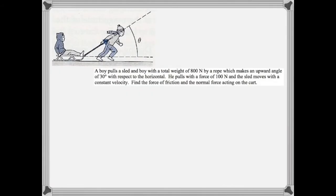In this situation, there is a boy on a sled with a combined weight of 800 newtons. Another boy is pulling them with a rope with a force of 100 newtons. Since the sled is moving with a constant velocity, there must also be some friction. What we'd like to figure out is what is that force of friction and also how big is the normal force. As always, we start by diagramming all of the forces acting upon the boy in the sled.